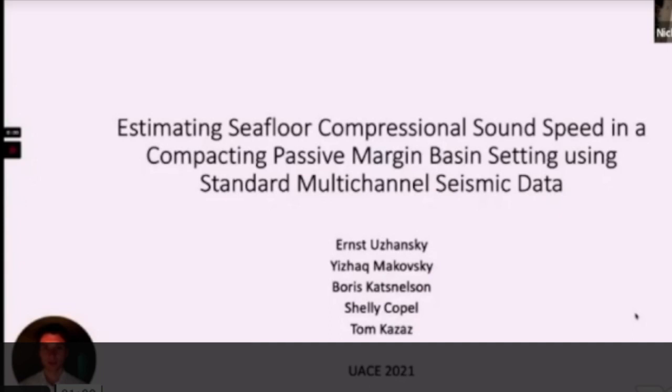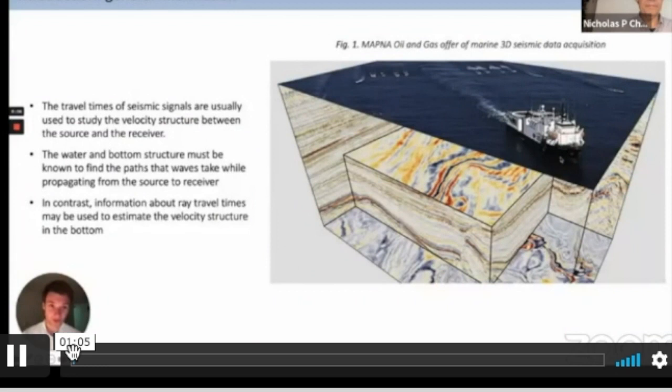This picture represents an example of a three-dimensional seismic data acquisition. There is a research vessel that carries several sets of air guns and also it carries several pretty long horizontal line arrays. Seismic signals, the travel times of seismic signals are usually used to study the velocity structure between source and the receiver. In contrast, if we know information about ray travel times and if we know information about the water structure, then we can estimate parameters of the bottom.